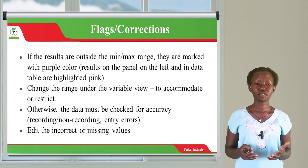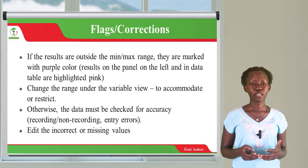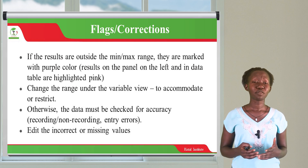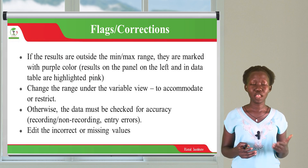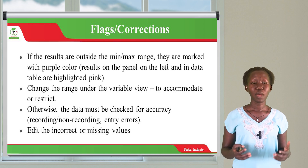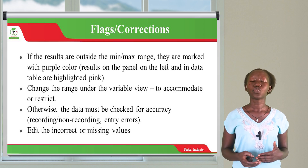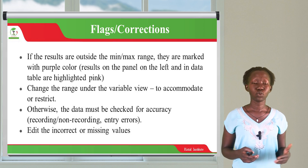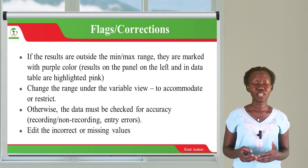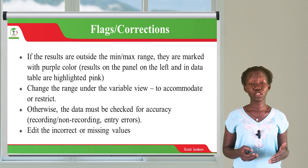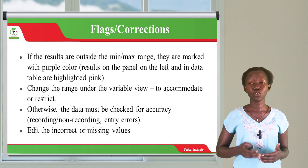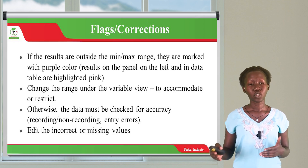We also have what we call flags in ENA for SMART. Flags are basically corrections. For example, if the results you have inserted are outside the minimum or maximum range, they are marked with purple color. You can change the range under the variable view to accommodate all your data. If you're working with a range of negative two to two and you have inserted a value of negative three, it's automatically going to be flagged with a purple color. Once you see it, you will realize you have made a mistake and need to adjust it to the correct range.